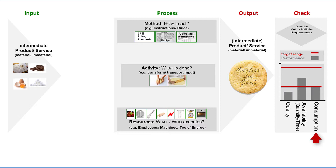At least, the customer may only spend a certain amount of money for the cookies — this attribute belongs to the category of consumption. The company also has output requirements: our bakery wants to produce the cookies with low input and resource consumption and therefore does not want to waste, for example, any ingredients or energy.